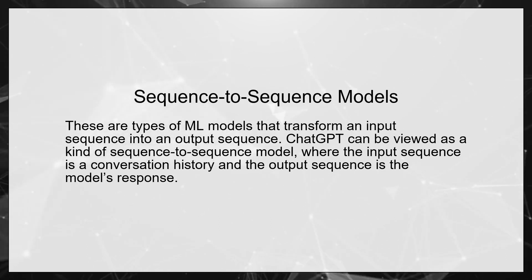Sequence-to-Sequence Models. These are types of ML models that transform an input sequence into an output sequence. ChatGPT can be viewed as a kind of sequence-to-sequence model, where the input sequence is a conversation history and the output sequence is the model's response.